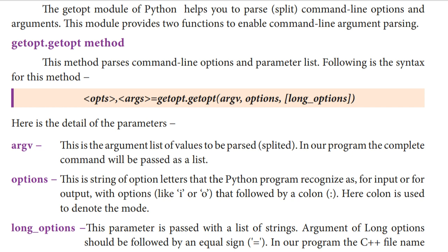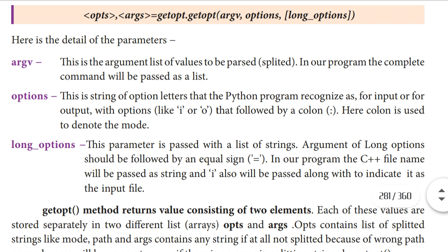This function contains three parameters, so we will see what they are. argv — this is already reviewed. In this module, argv contains the command lines. All the command lines are stored in the form of arrays, that is a list. So that is what we pass in the argv parameter. This is the argument list of values to be passed and splitted.